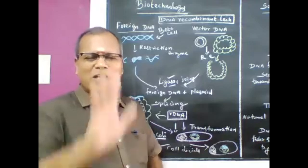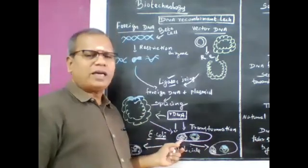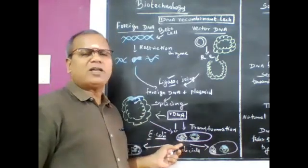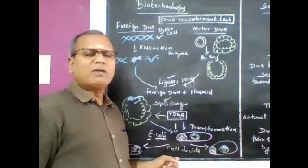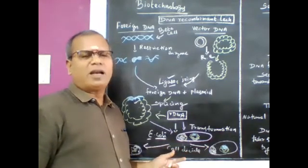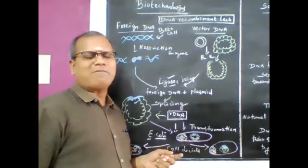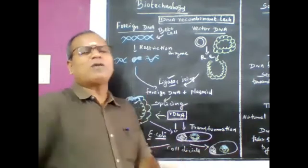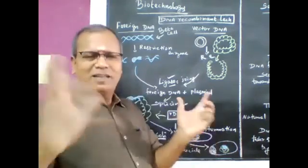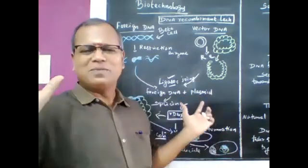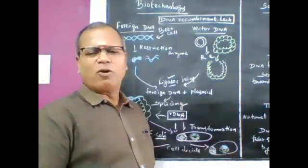That insulin is said to be Humulin. E. coli is now genetically modified to secrete human insulin — and that insulin is called Humulin. For a diabetic patient with severe insulin deficiency, this is the solution if natural insulin injection is not available.